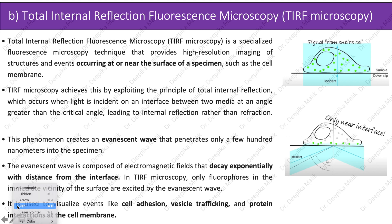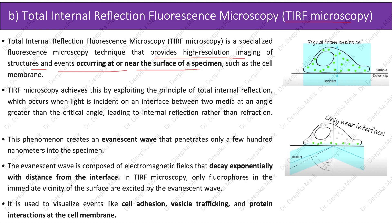Total Internal Reflection Fluorescence Microscopy, also known as TIRF microscopy, is a specialized fluorescence microscopy technique that provides high-resolution imaging of structures and events occurring at or near the surface of a specimen, such as the cell membrane. TIRF microscopy achieves this by exploiting the principle of total internal reflection, which occurs when light is incident on an interface between two media at an angle greater than the critical angle.